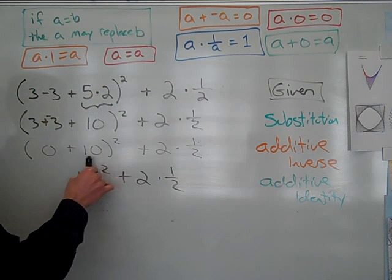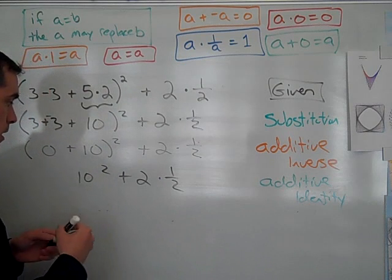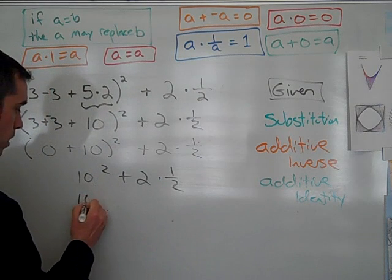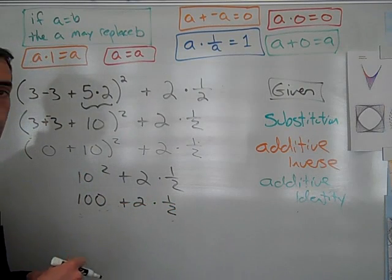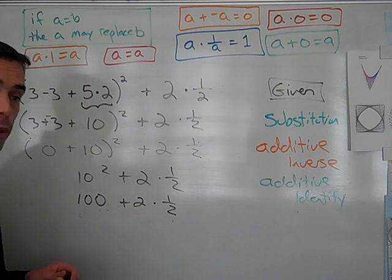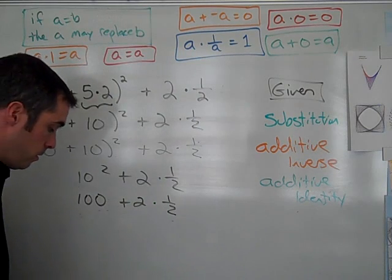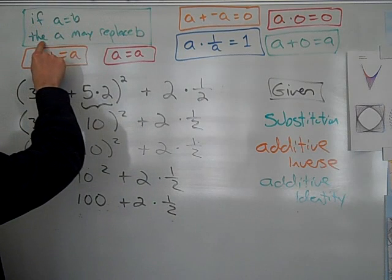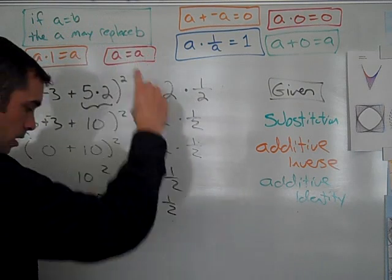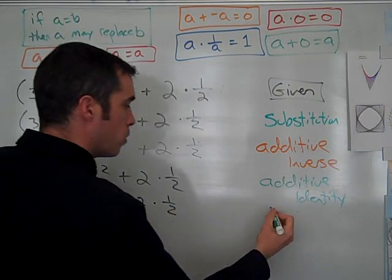I now am going to work with exponents, again, through order of operations. 10 squared is the same as 100 plus 2 times 1 half. Why am I allowed to replace 10 squared with 100? Well, that is substitution. If 10 squared equals 100, then 10 squared may replace 100. And that is my substitution property.